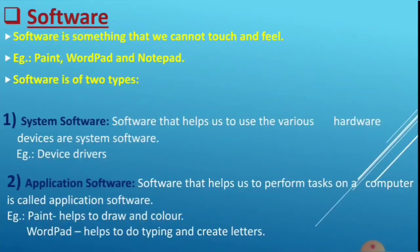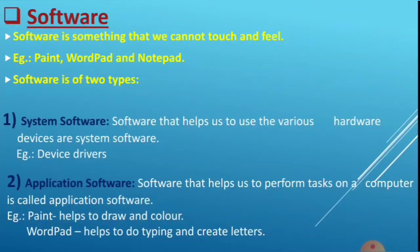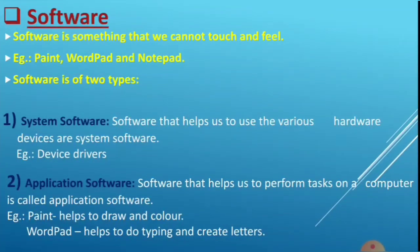Next is software. Software is something that we cannot touch or feel — it is totally opposite to hardware. For example, Paint, WordPad, and Notepad are software. In short, software is an application or program installed in the computer that we cannot touch but we can work on.